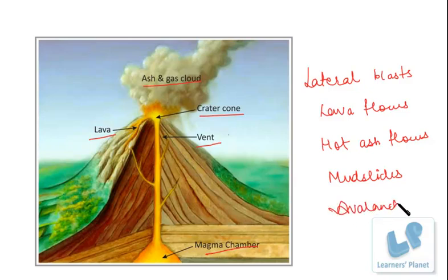Volcano eruptions have been known to knock down entire forests. An erupting volcano can trigger tsunamis, flash floods, earthquakes, mudflows and even rockfalls. So it is very, very devastating.